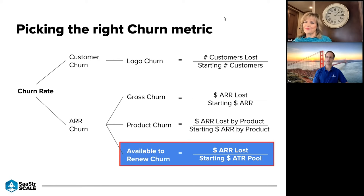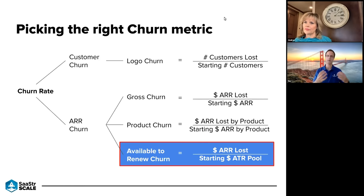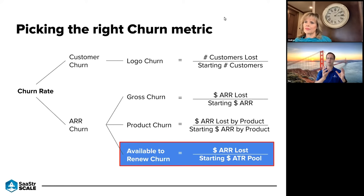There's also product churn — if you're running a product team, it's helpful to understand if your product's being used or if customers are removing products. They may be replacing them with other products, meaning we haven't lost the customer or the revenue, but it's useful to understand product churn to inform product management decisions. Then there's available-to-renew churn — probably the most useful when you're trying to understand true business dynamics. It excludes the multi-year contracts piece, so it tends to be a slightly higher rate than gross churn.